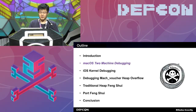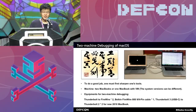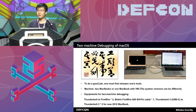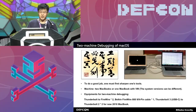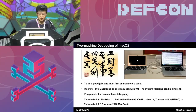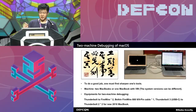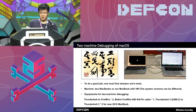Let's talk about macOS debugging first. A wise man once said: to do a good job, one must first sharpen one's tools. So we need to buy some equipment. First, we need two MacBooks, or one MacBook with a virtual machine. The system versions can be different, which means you can debug macOS 10.10 on macOS 10.11. Also, you need to buy some connectors or cables like Thunderbolt to FireWire or a FireWire cable.